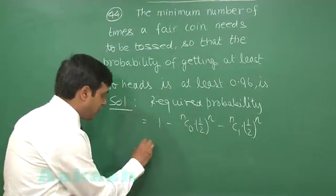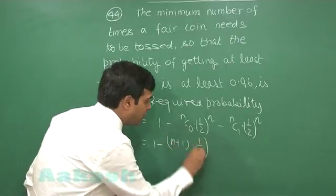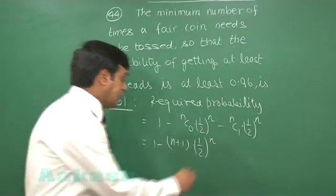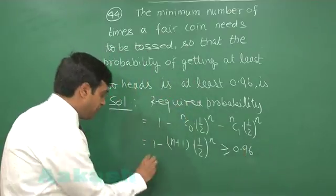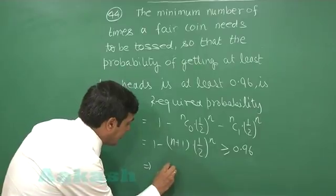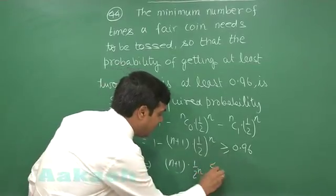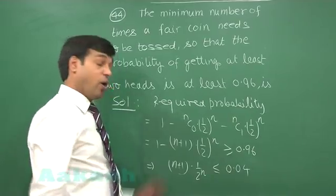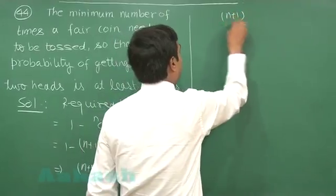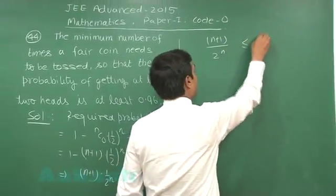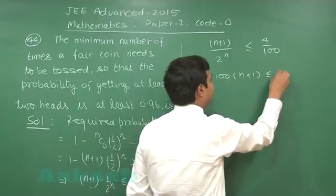So it is 1 minus (n+1) times (1/2)^n, which is greater than or equal to 0.96 as given. Further simplifying, we can write it as (n+1) times (1/2)^n is less than or equal to 0.04, or (n+1) times (1/2)^n is less than or equal to 4/100, or 100 times (n+1) is less than or equal to 2^(n+2).